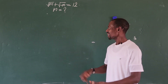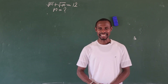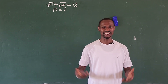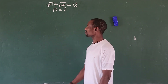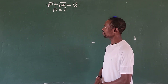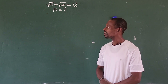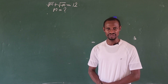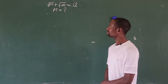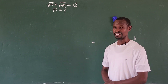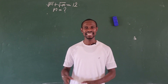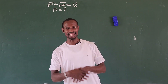Hi everyone! Here's another math challenge for us to consider. How do we solve this radical equation? The question is: the square root of m plus the square root of minus m equals 12. What is the value of m that will satisfy this radical equation?